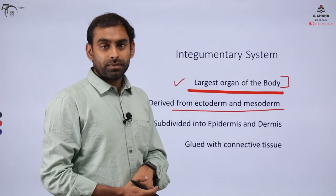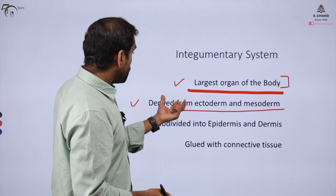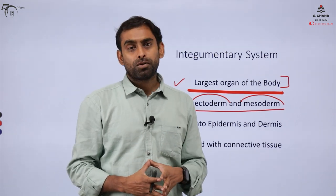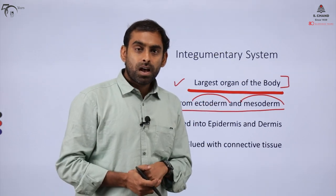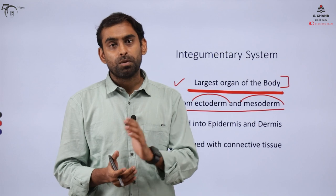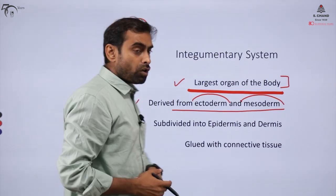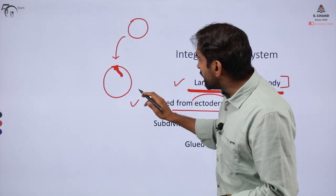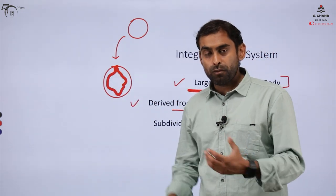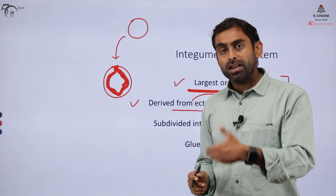Looking at ontogeny, which you will read in developmental biology, this integumentary system actually derives from the ectoderm and mesoderm. In embryonic development, some organisms are diploblastic and some are triploblastic — meaning, when a zygote develops, the basic cells of the embryo split up into layers through embryogenic cellular movements such as epiboly or emboly, and they give rise to the formation of certain cavities in the body.